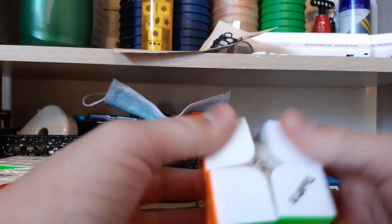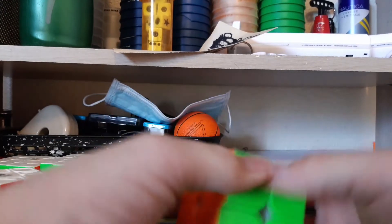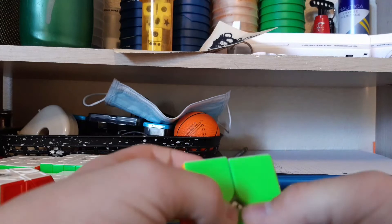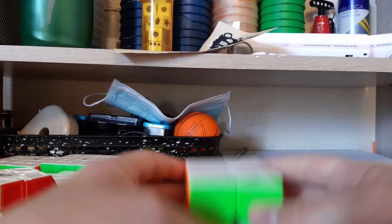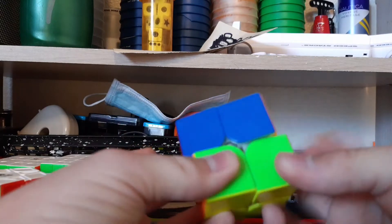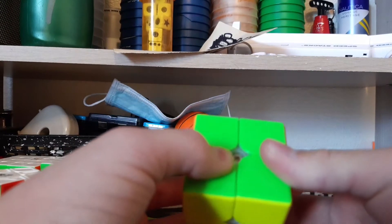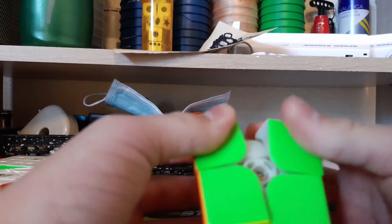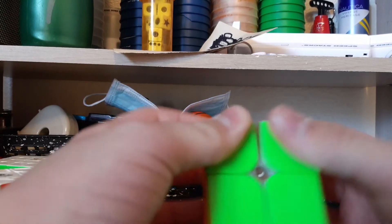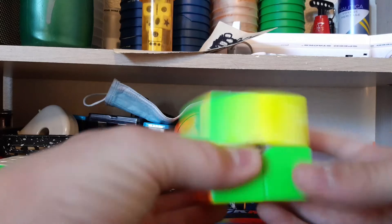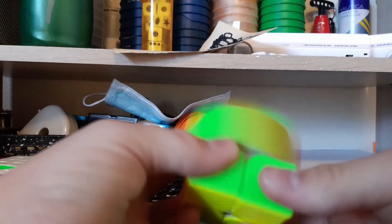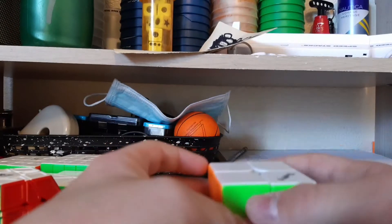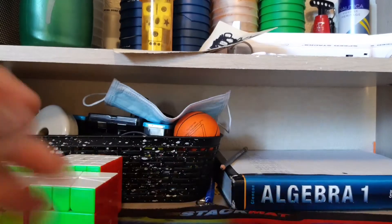Currently I'm kind of trash at 2x2. I know like maybe 10 CLLs right now but I don't really know many CLLs. I'm mainly using LBL and Ortega but I do average like sub-3.2, something like that, so low 3 to high 2s. Sub-2 singles aren't that rare for me anymore and I've had like a few sub-1 singles as well.